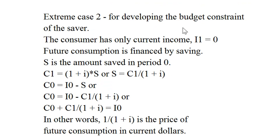Now let's look at extreme case two for developing the budget constraint of the saver. The consumer has only income in the current period. So I1 the future income is zero. Future consumption is financed by saving. S is the amount saved in period zero.